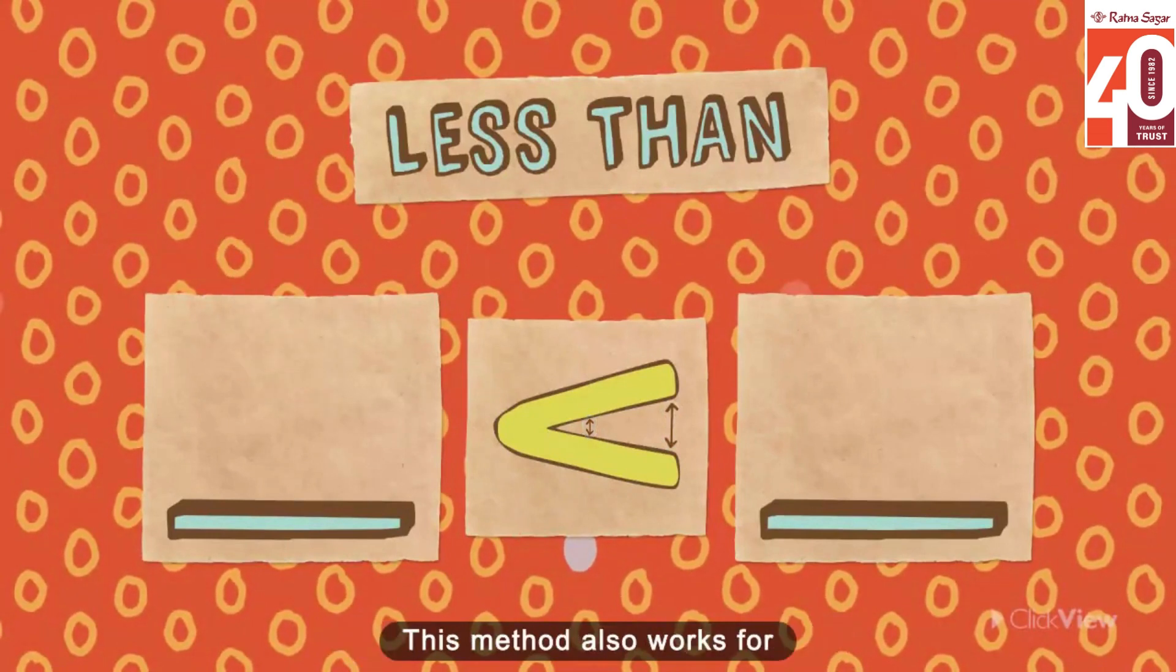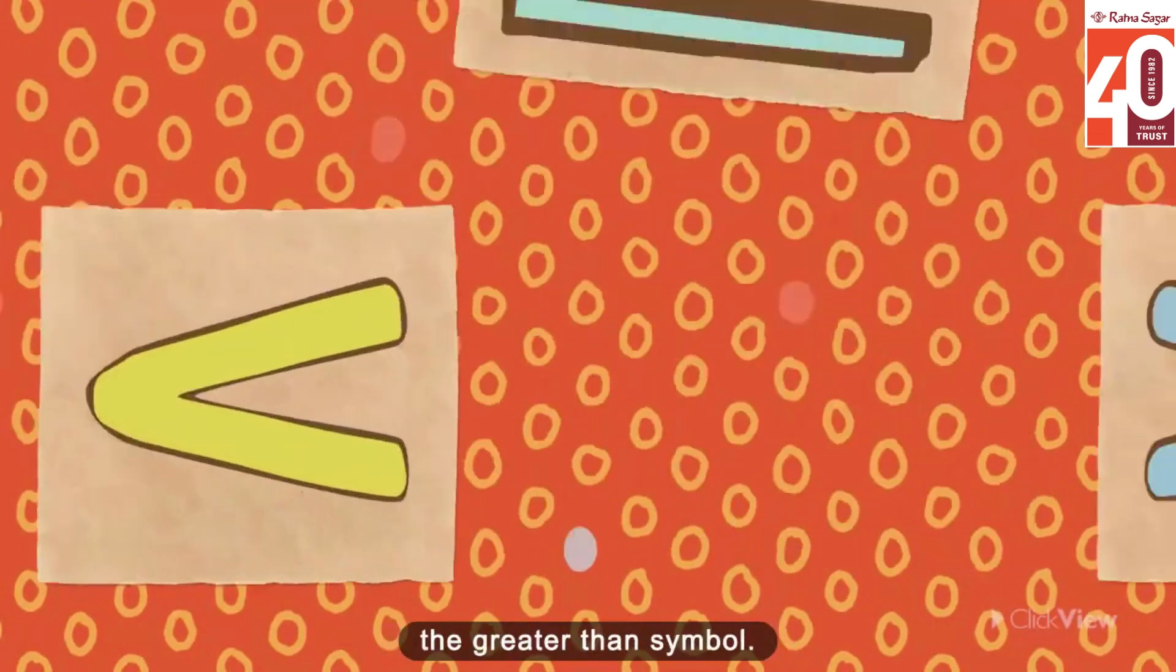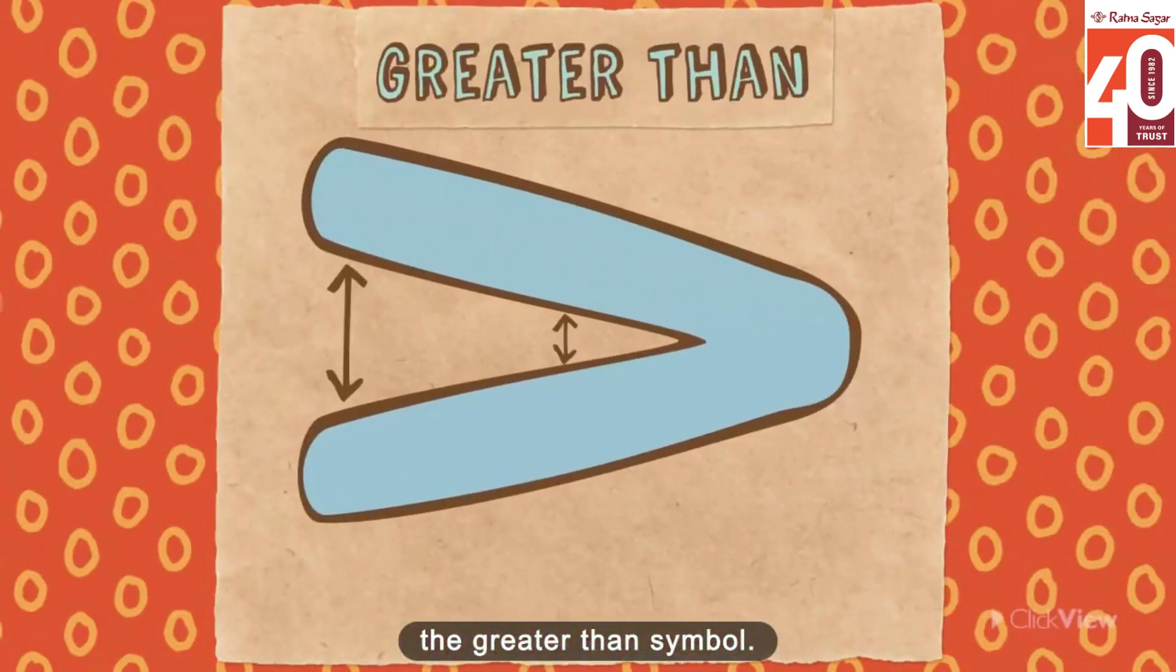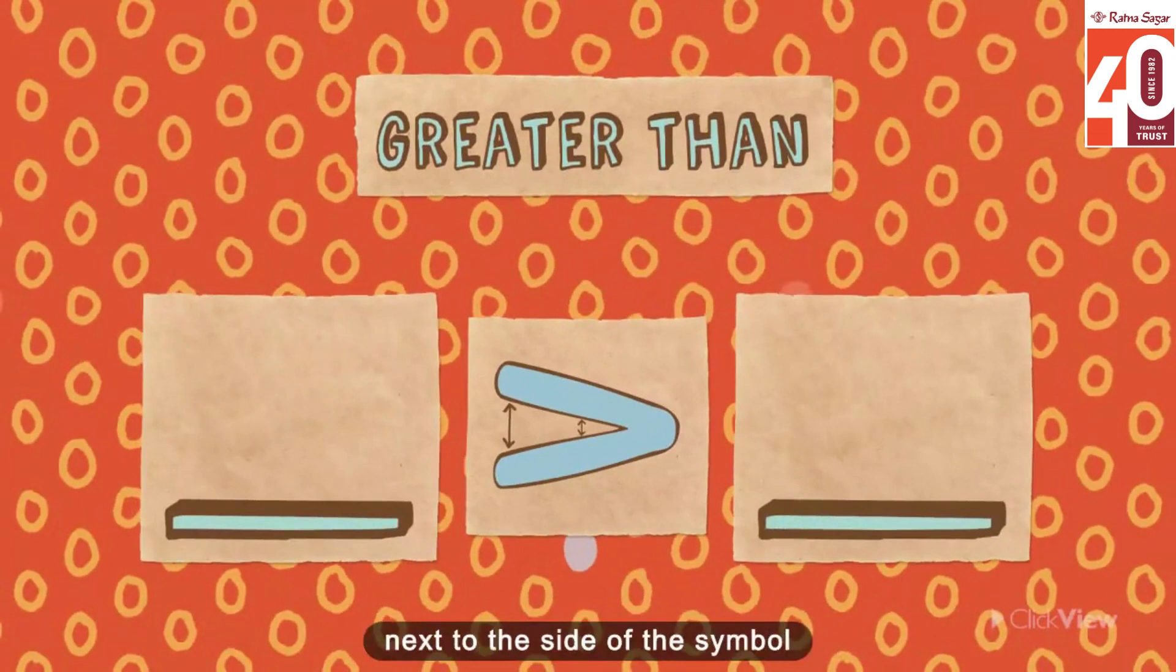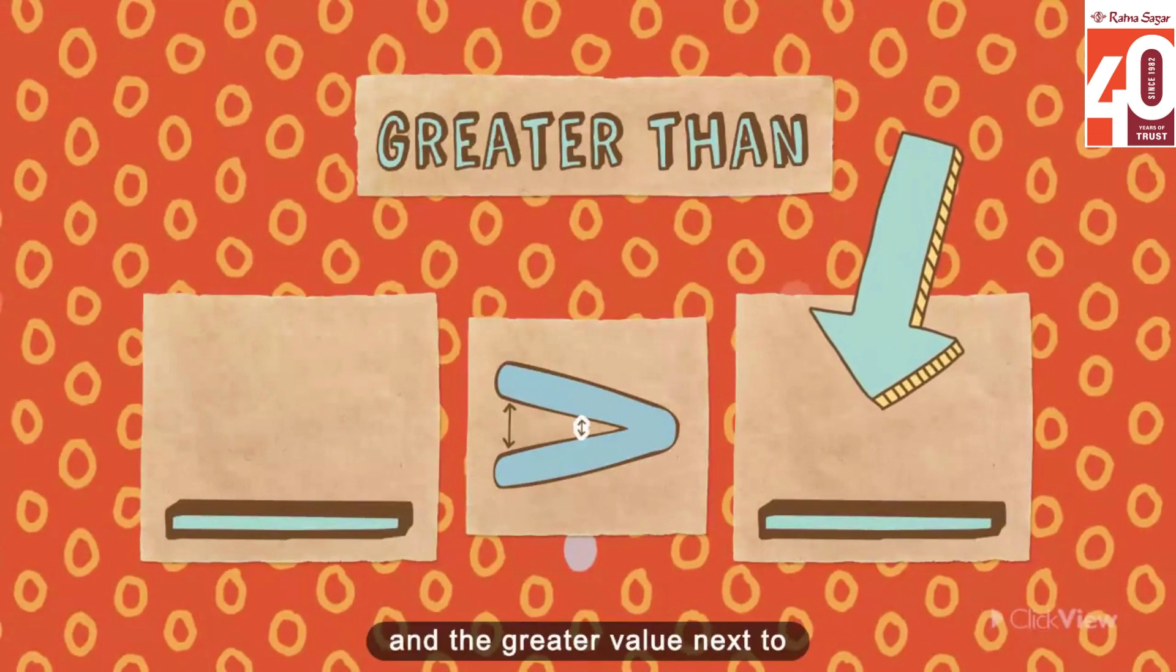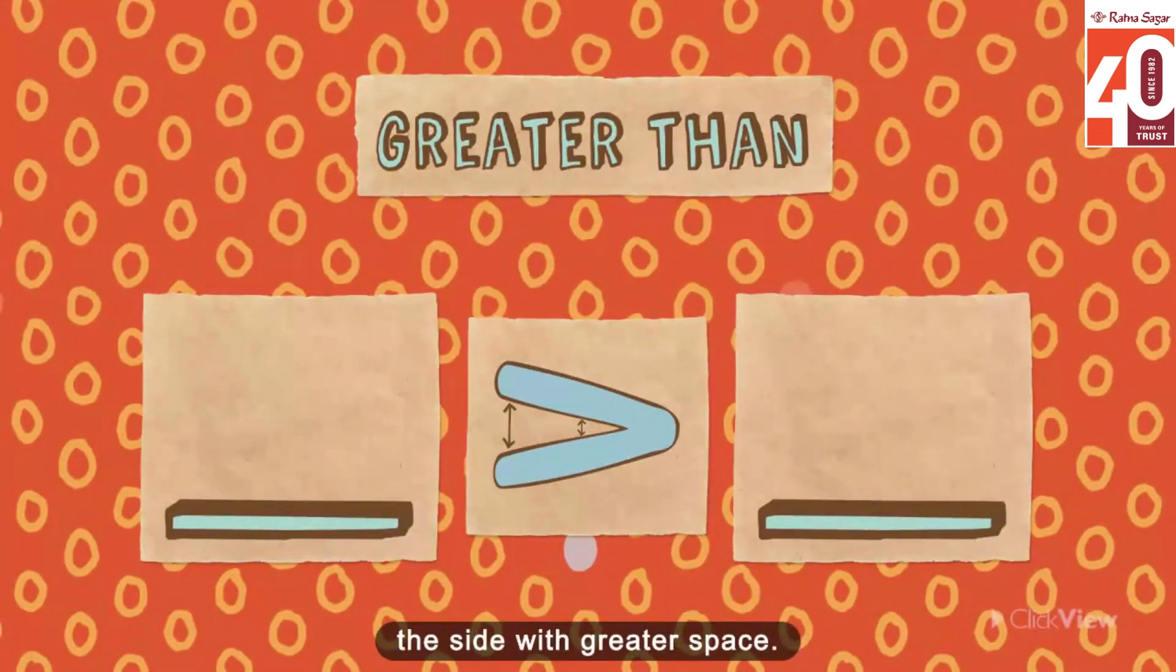This method also works for the greater than symbol. The smaller value is placed next to the side of the symbol with less space and the greater value next to the side with greater space.